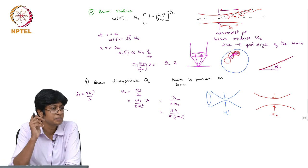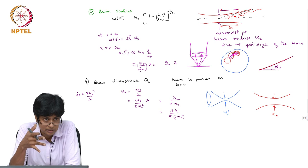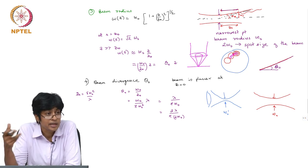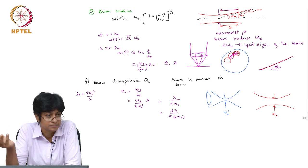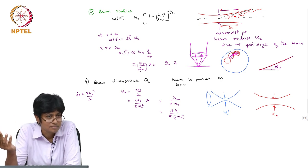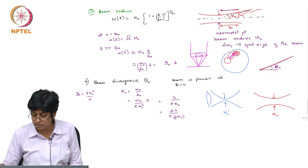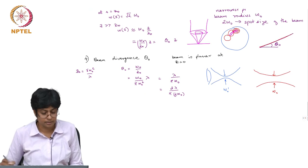I have to manage both the divergence and the beam size so they both come to acceptable values. I cannot say I want this θ₀ and I want this ω₀ and achieve both independently — it is not possible. If I wanted a highly directional beam — a small θ₀ — then ω₀ has to be larger. In other words, if I want a beam to travel a longer distance I need a fat beam, which means I need larger optics.